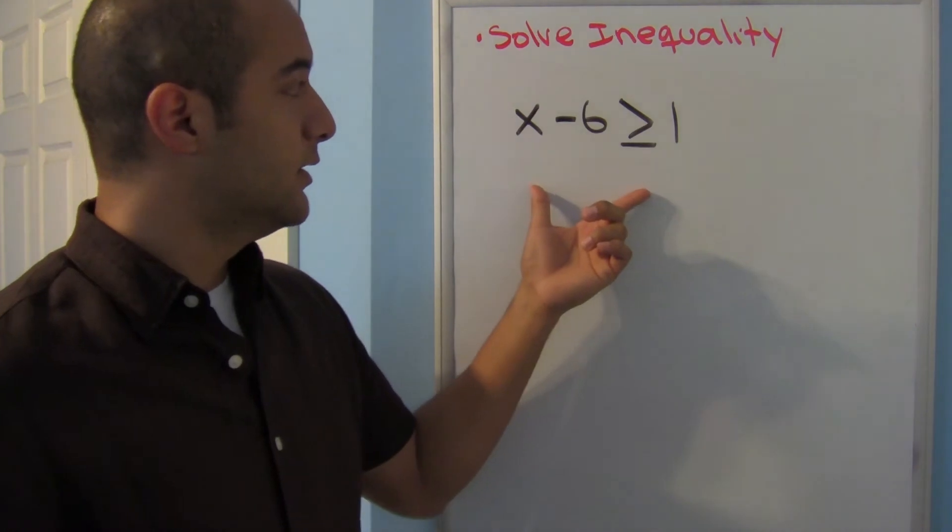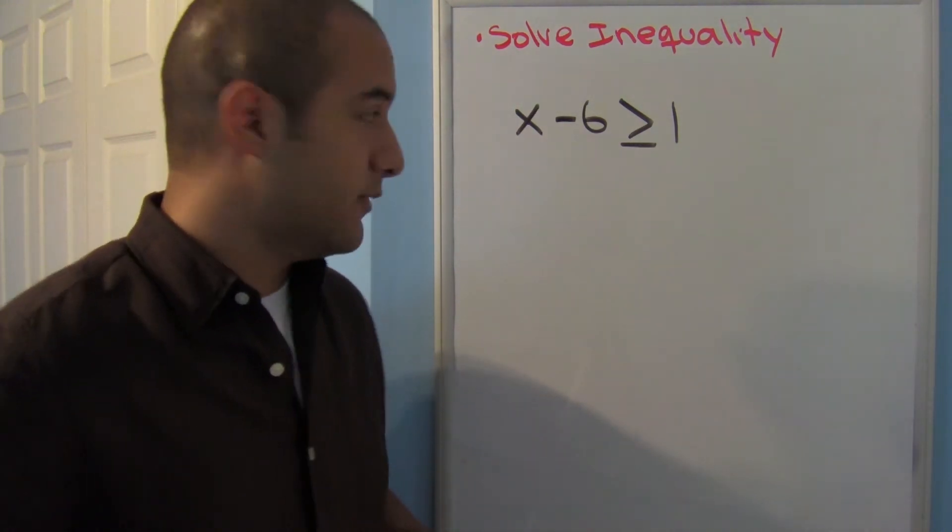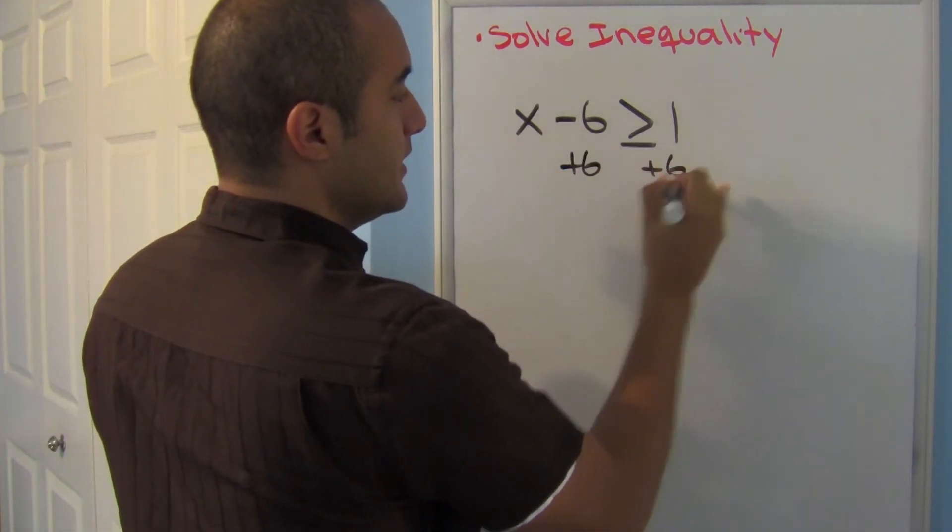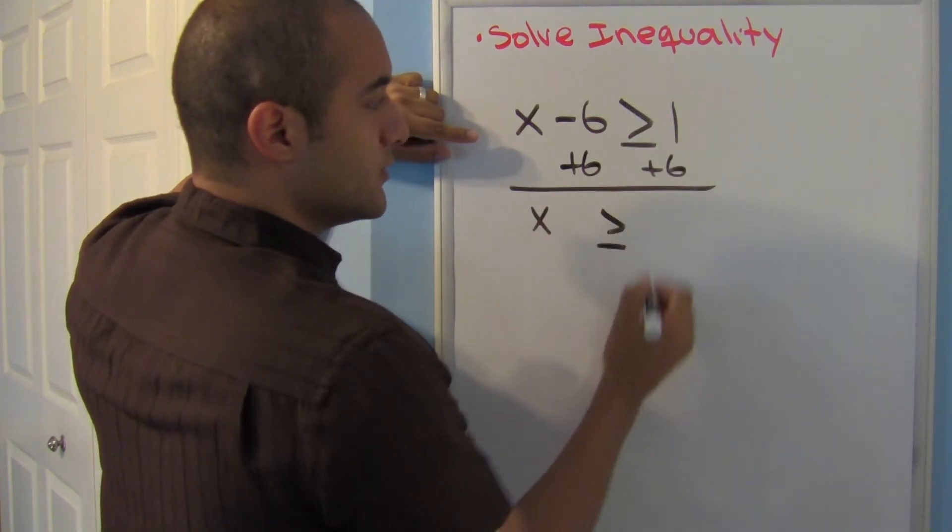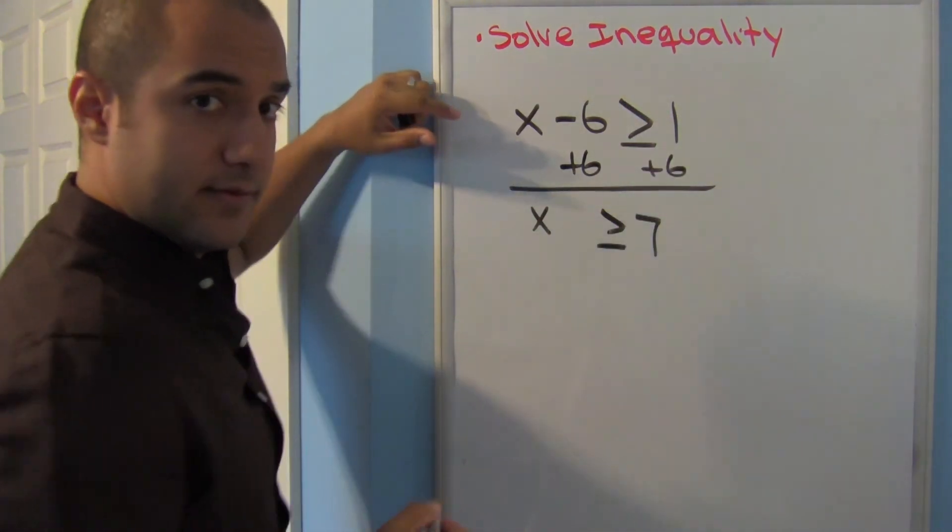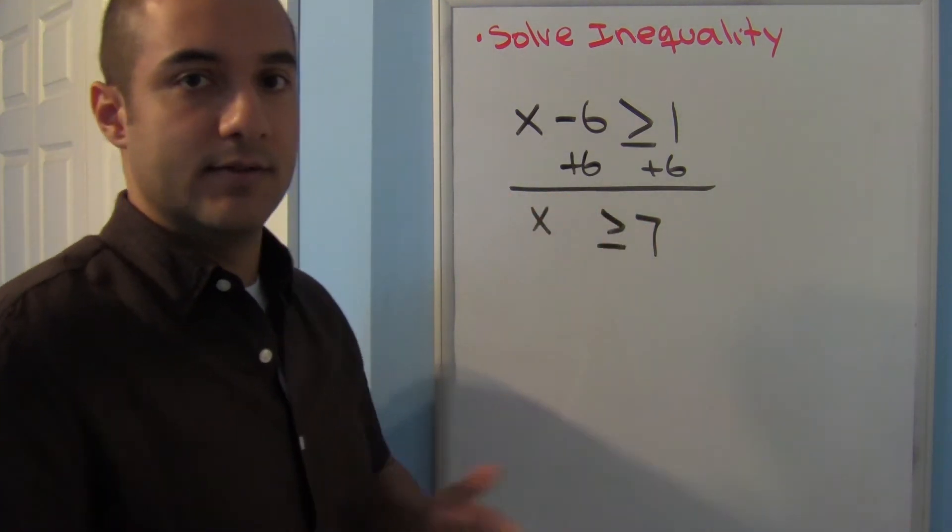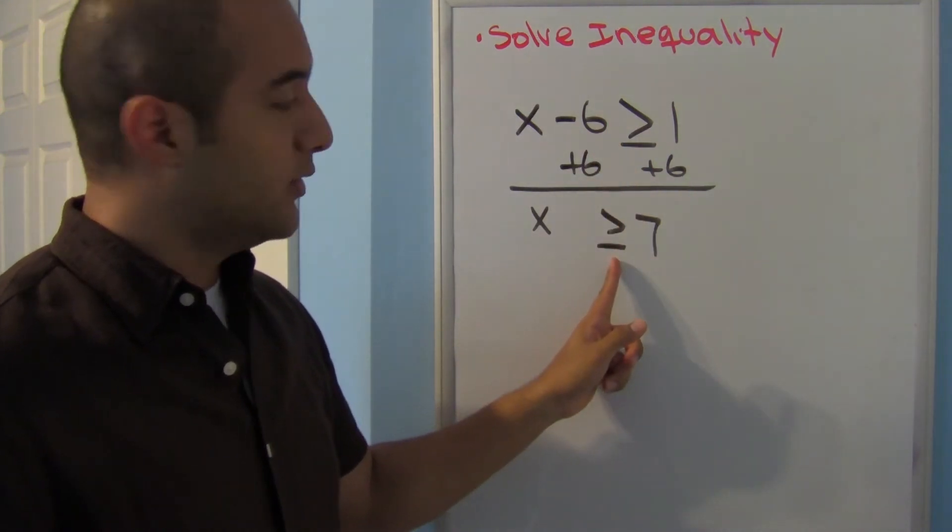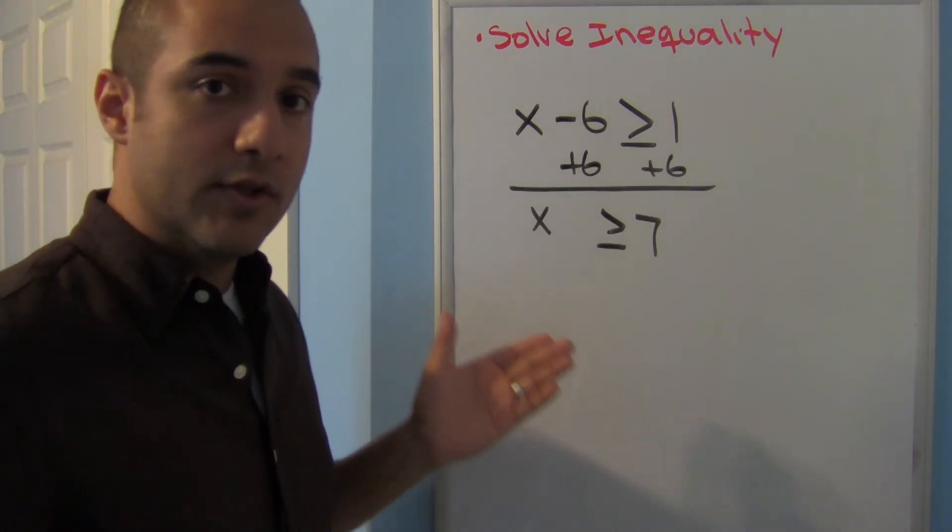Alright, what about here? Well, if you guessed adding 6 to both sides, you're correct. I'll simply add 6 to both sides. Bring down that x greater than or equal to 7. So notice that I can add and subtract just like I was doing before, and I always bring down my symbol exactly as it is. So nothing new here, really.